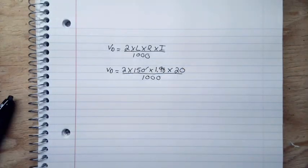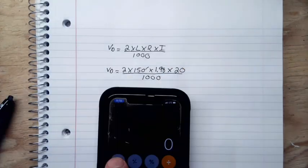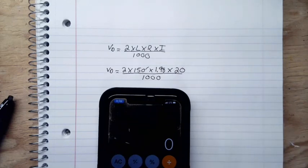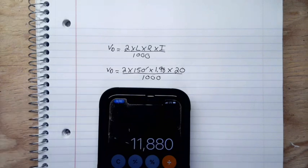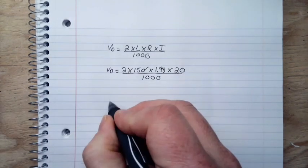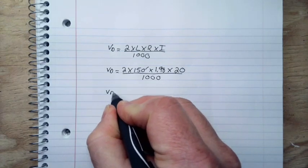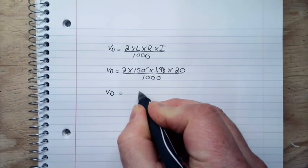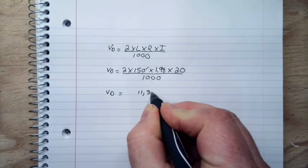Now it's as simple as doing the math. Bring up my calculator here. I'm going to do 2 times 150 times 1.98 times 20, which will equal 11,880. So what I'm going to do now is continue to write this below. VD, all of these together came out to 11,880.